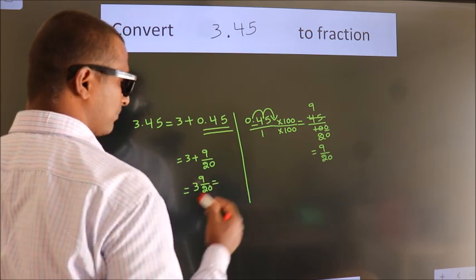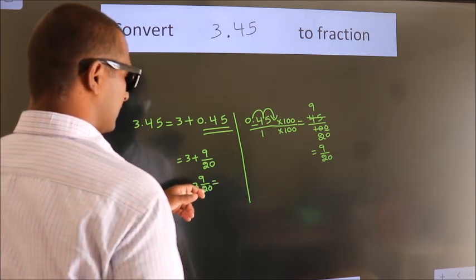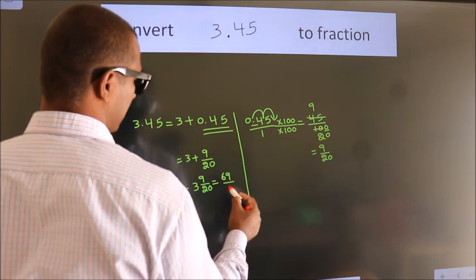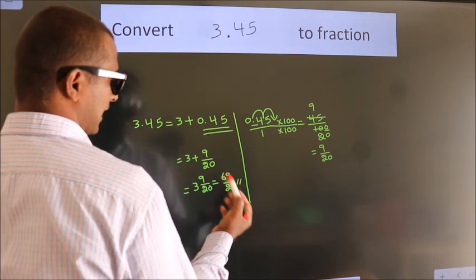And in improper fraction it is 3 into 20, 60 plus 9, 69 by 20 is our fraction.